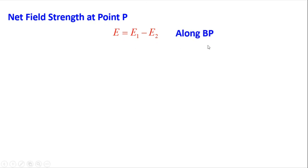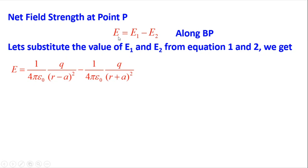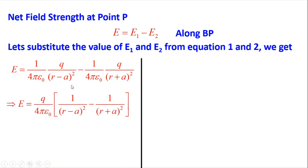Substituting the values of E1 and E2: E = (1/4πε₀) × q × [1/(r − a)² − 1/(r + a)²]. Taking (q/4πε₀) as common, we simplify the expression inside the brackets: 1/(r − a)² − 1/(r + a)².